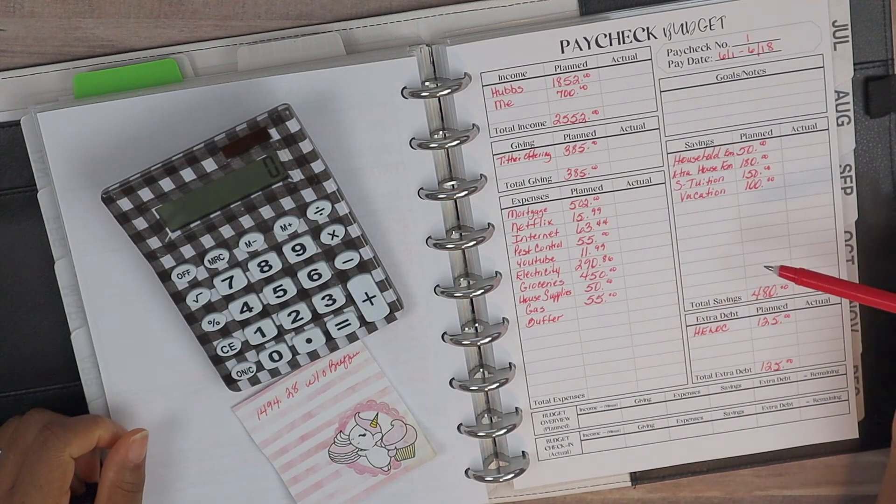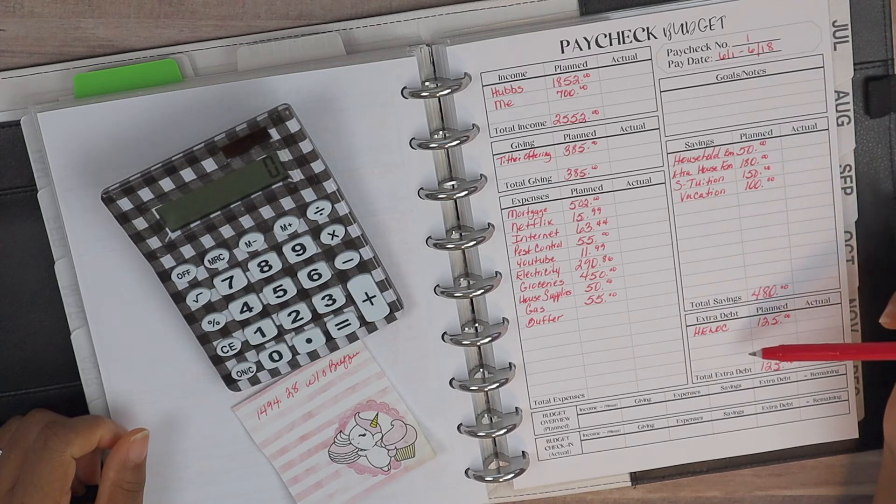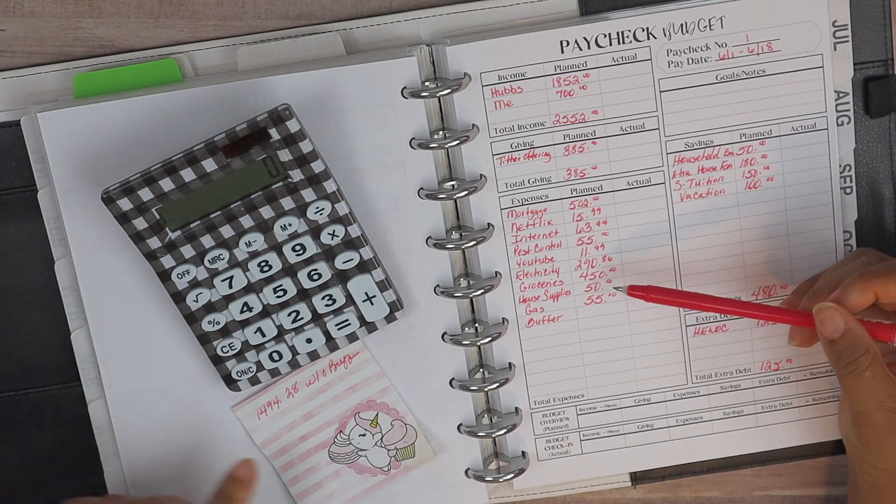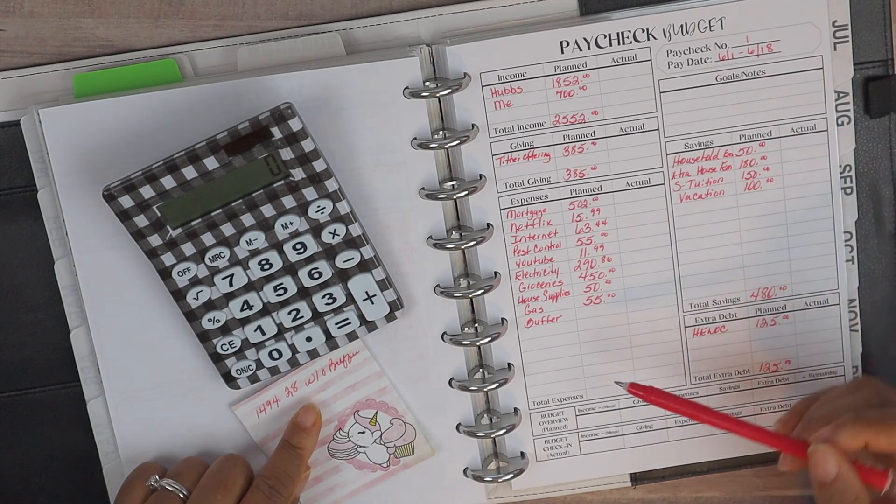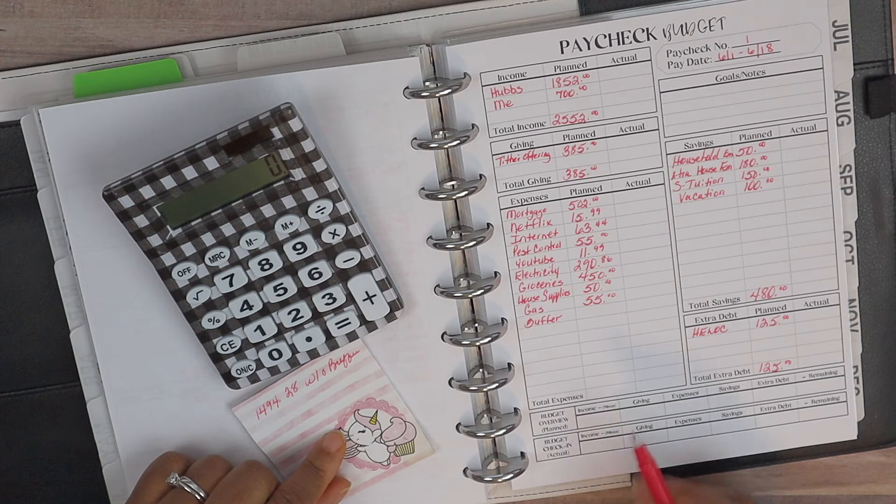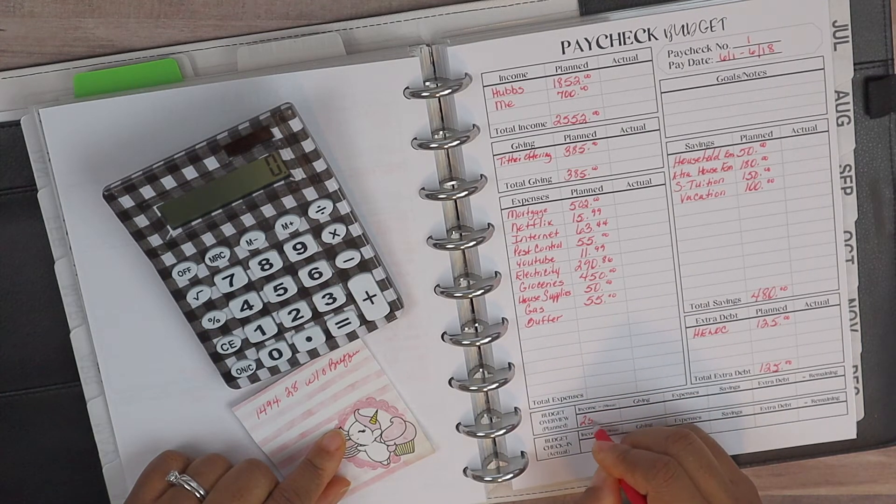All right guys, so I have finished totaling the expenditures and the savings and extra debt. Everything comes to $1,494.28 and that's without the buffer. So I'm going to go ahead in the plan section, go ahead and plug everything in.